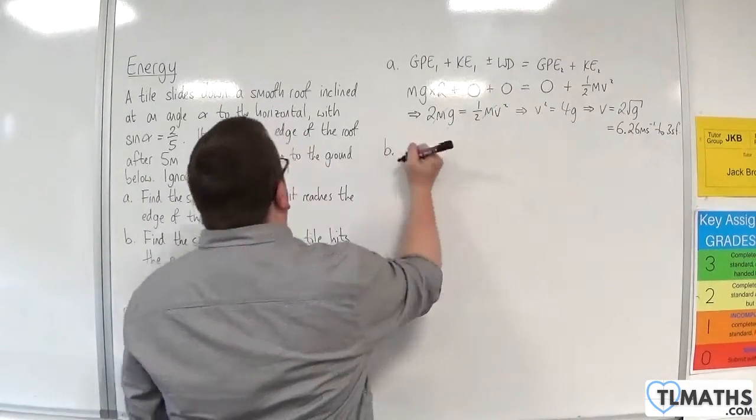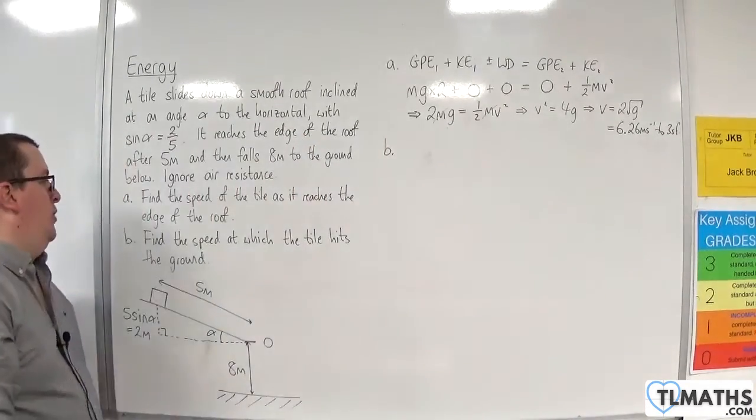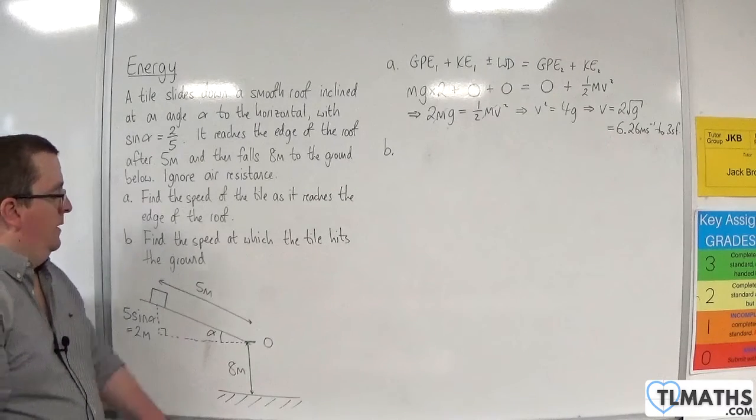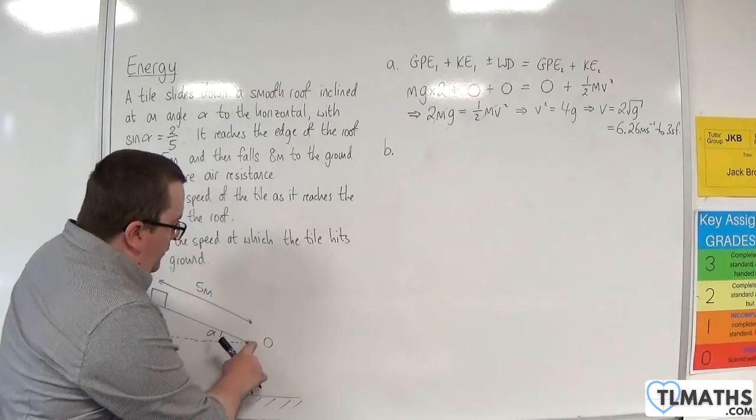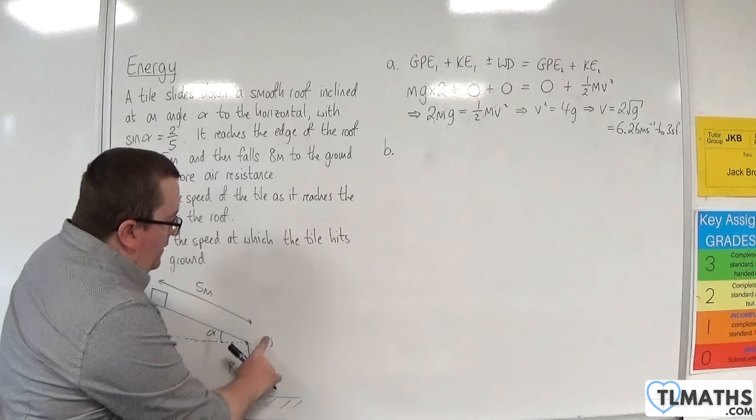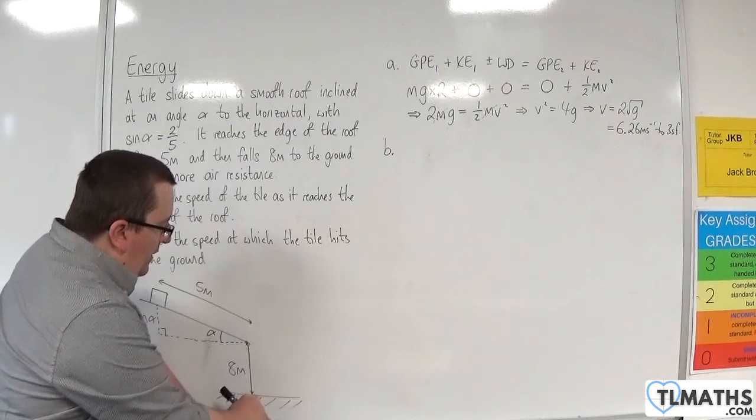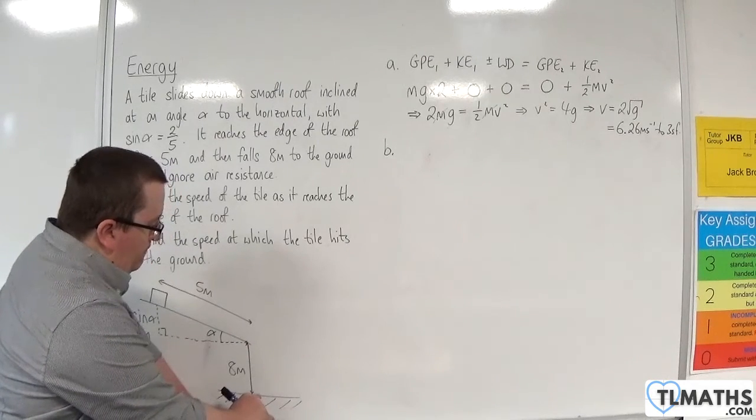Part B. Find the speed at which the tile hits the ground. So now we're at this point. So I'll no longer consider that as ground zero. I'll consider this as ground zero.